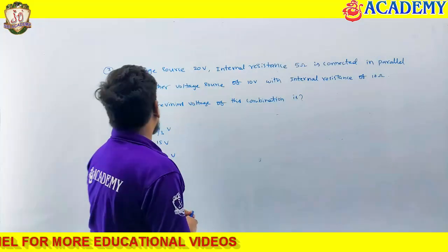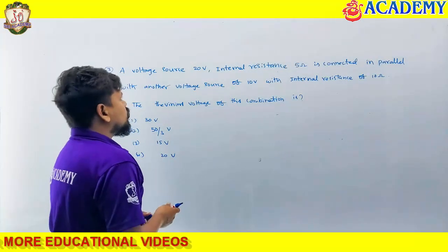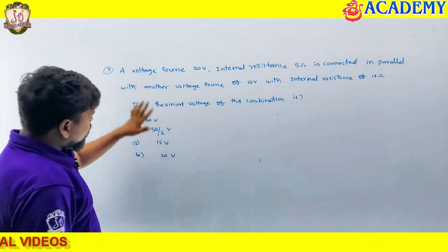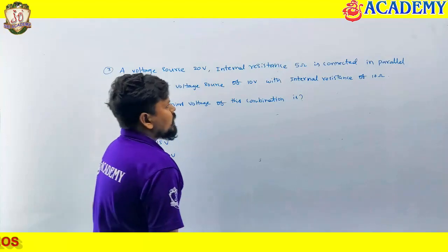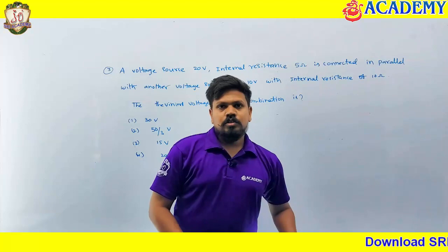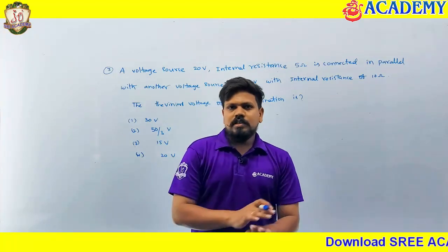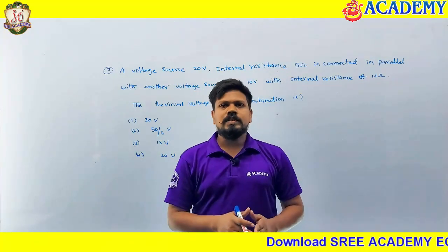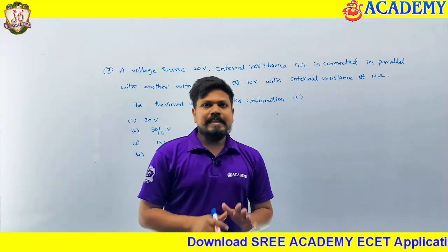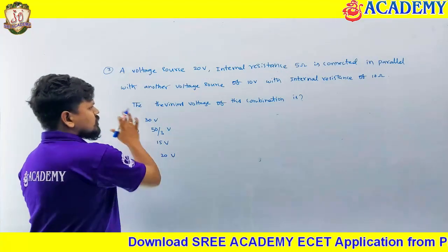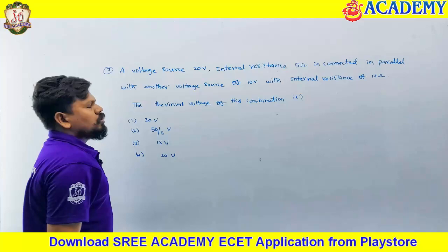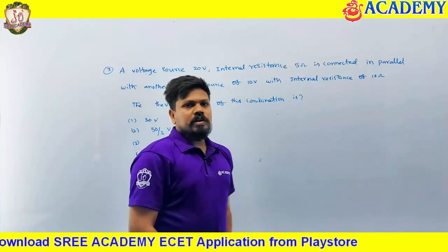The next question: a voltage source of 20 volt with internal resistance of 5 ohms is connected in parallel with another voltage source of 10 volt with internal resistance of 10 ohms. The Thevenin's voltage across the combination is? In all ESET or any type of exams, most probably only statements are given, not circuits. In the circuit subject, whenever you see a statement, first draw the circuit — then it will be easy to understand.